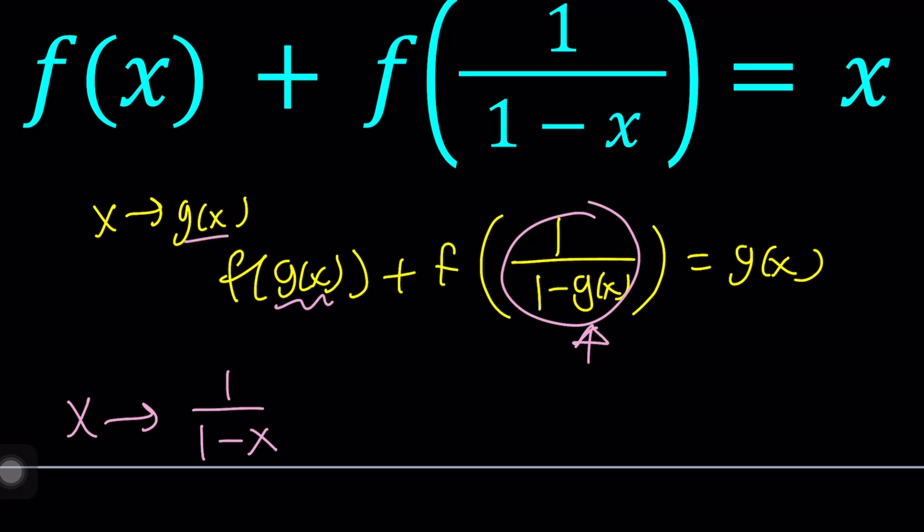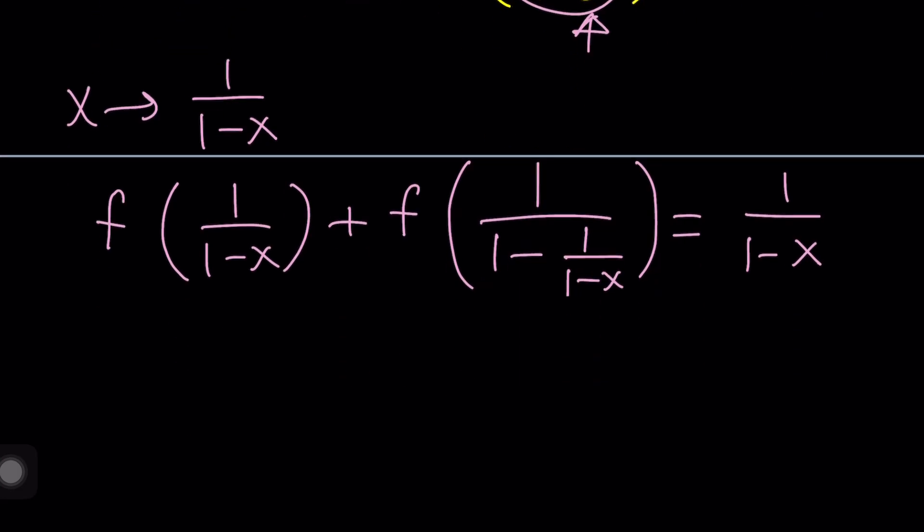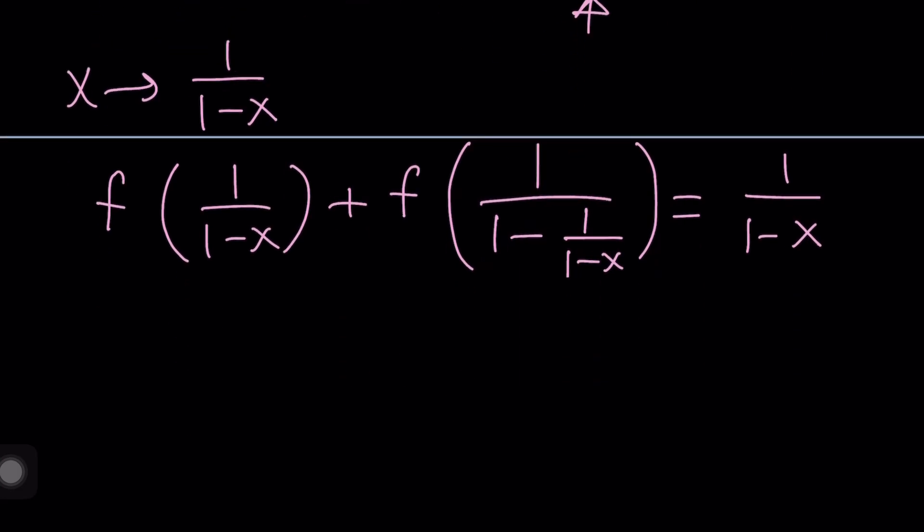In other words, I pick my g of x to be that. If you do it, you're going to get f of 1 over 1 minus x plus f of 1 over 1 minus g of x, but g of x is 1 over 1 minus x. And then this should be on the right-hand side, 1 over 1 minus x because that's g of x. Make sense? When you use a different variable, it's a little easier to understand, I think.